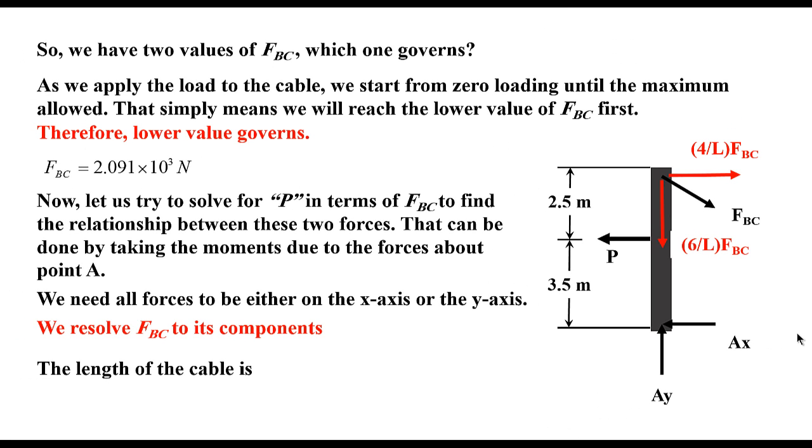Assuming that you guys are following along. Now, we need the length of the cable as well, because we need to plug it in in the equation. For example, 4 over L, what is L? L is basically the square root, again from Pythagorean theorem, the square root of 4 squared plus 6 squared. And that should equal to 7.21 meters.